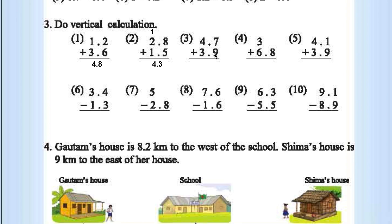9 plus 7 is 16, write 6, carry 1. 4 plus 3 is 7 plus 1 gives 8, so answer is 8.6. This one is 9.8. Here: 0 in tenths, 4 plus 1 is 5, 5 plus 3 is 8, answer is 8.0 which is 8. Next: 4 minus 3 is 1, 3 minus 1 is 2, so answer is 2.1.